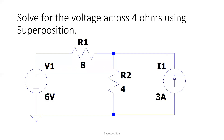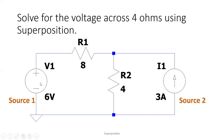Now let's move to the example. We will solve for the voltage across 4 ohms using superposition. First, you need to count the number of independent sources. We have two independent sources. Let's name the 6-volt source as source 1, and the 3-ampere source as source 2. We'll have one independent source at a time when solving superposition.